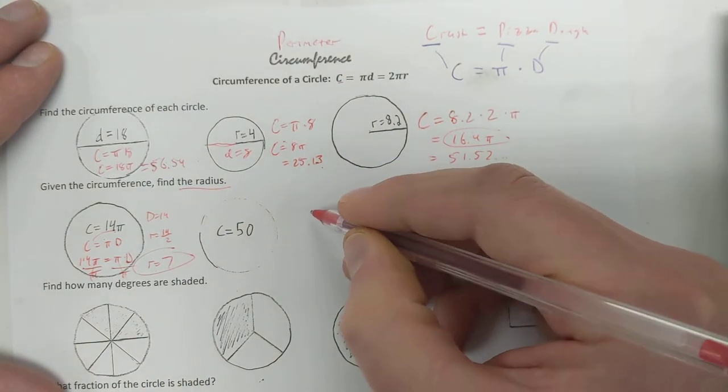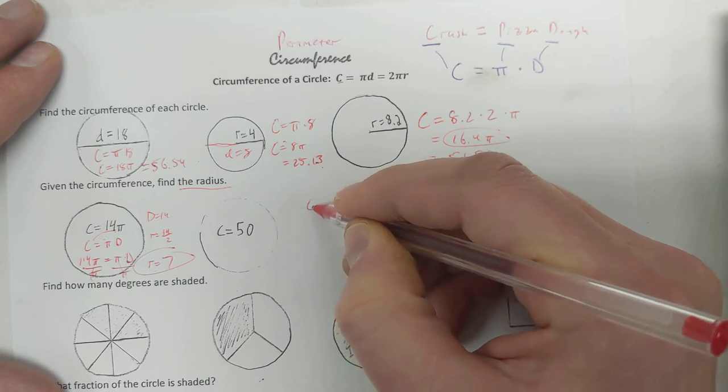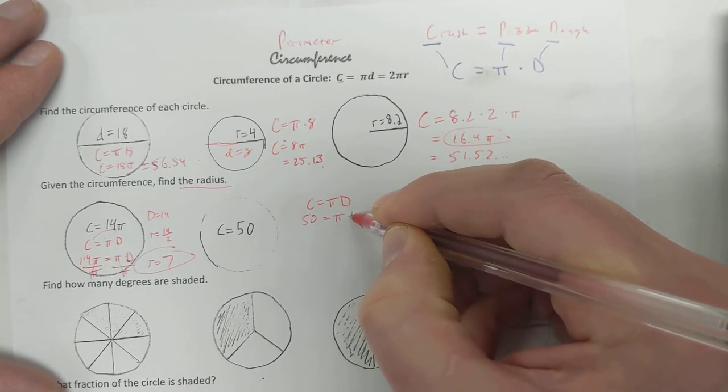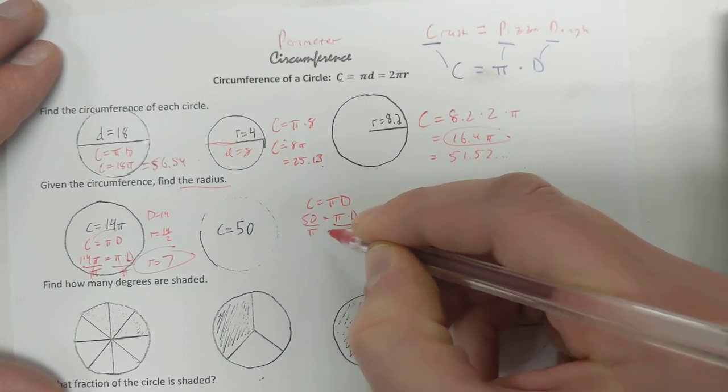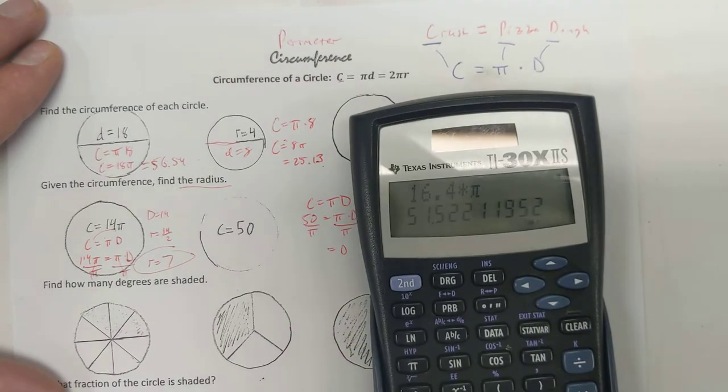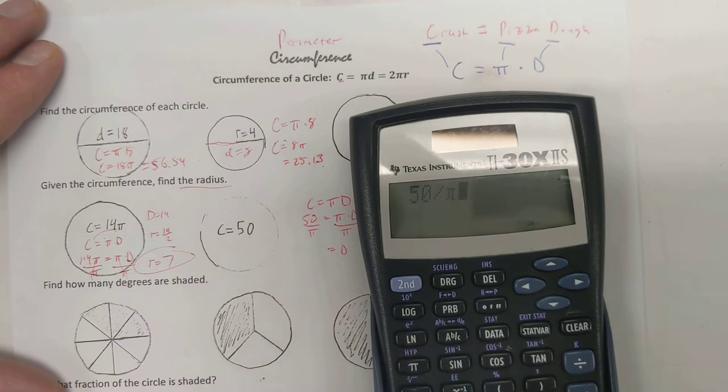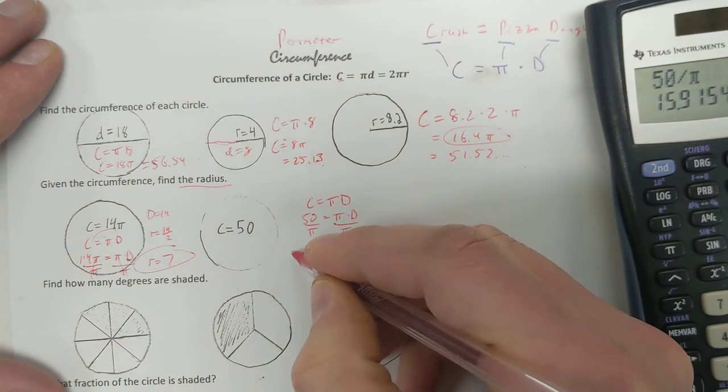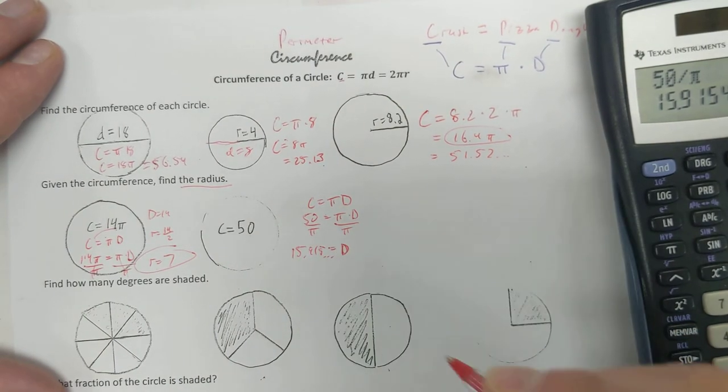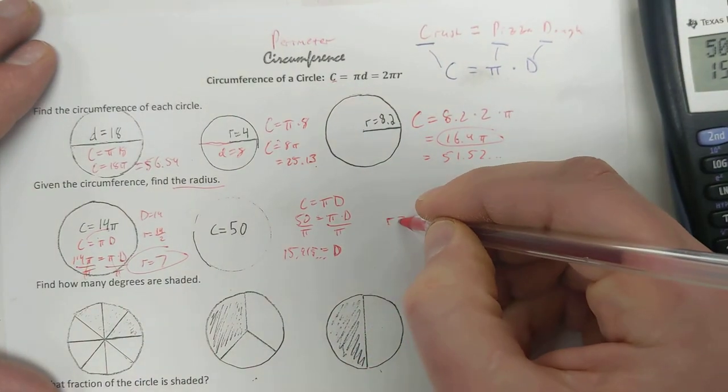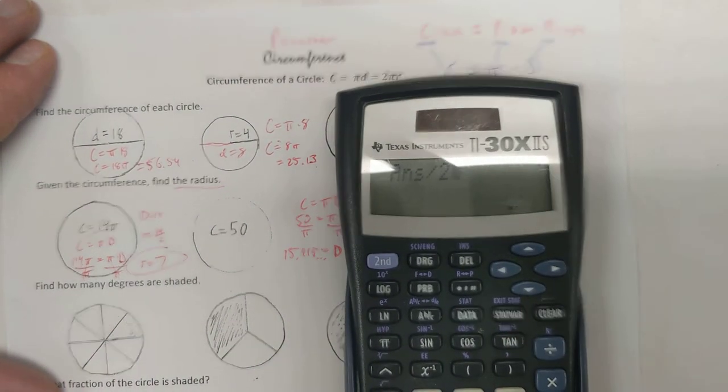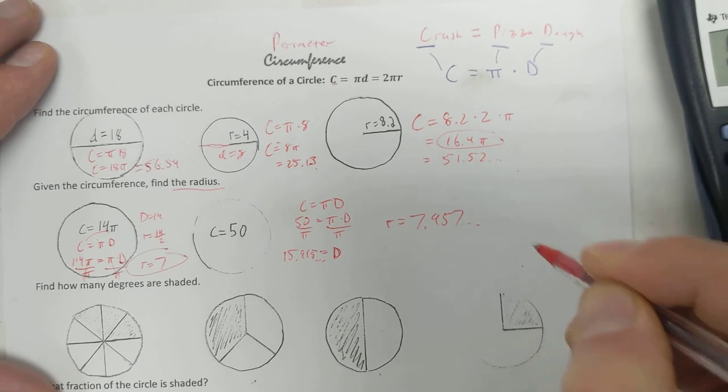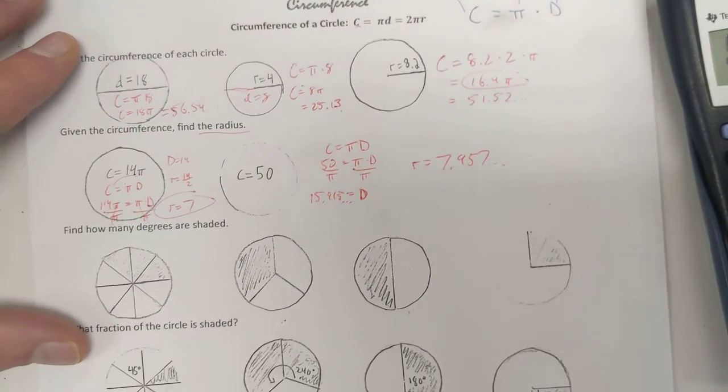Next one, same sort of thing. I'm going to do circumference equals pi times diameter. 50 equals pi times diameter. Divide both sides by pi. So the diameter is going to be 15.915, and then the radius would be half of that. So I'm going to divide that by 2. 7.957. Alright. Moving on.